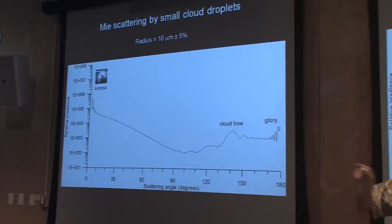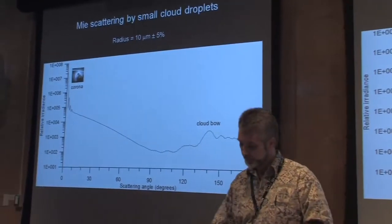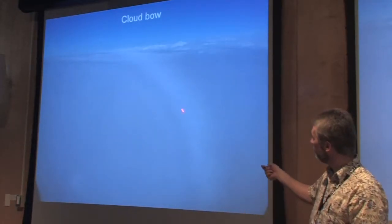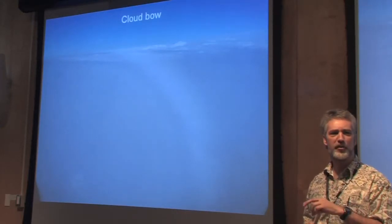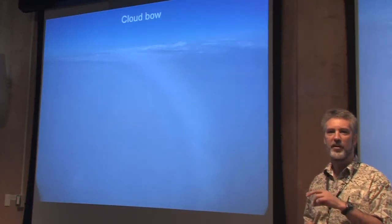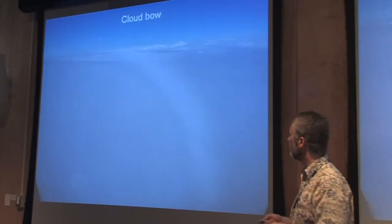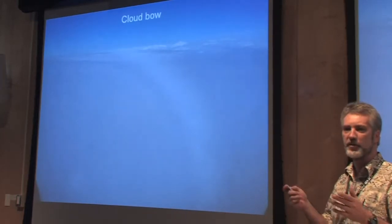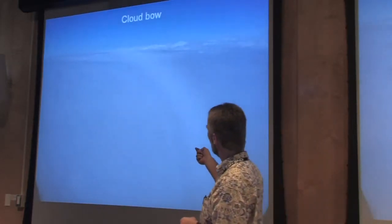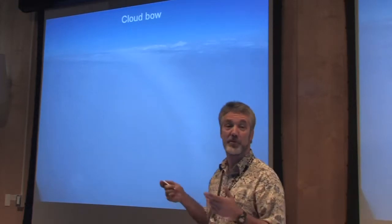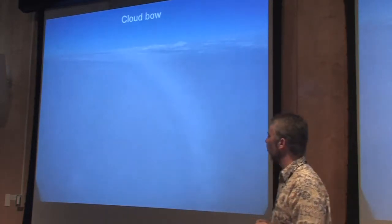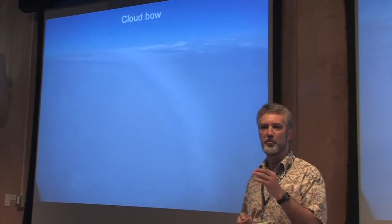If you look in the opposite direction, toward the anti-solar direction, and see colored rings around that point, that's called the glory. Here is a picture of a cloud bow and a glory. The cloud bow is that white band — usually there's not much coloration because particles are so small that interference overlaps the colors, giving us a white rainbow. Down at the center, at the anti-solar point, you can just barely make out a little colored ring — that's the glory.